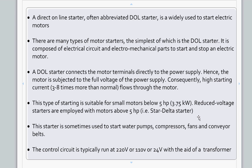This type of starter is only suitable for small motors, basically below 5 hp. Above 5 hp, it is better to use star-delta starter or electronic starters. This starter is sometimes used to start water pumps, compressors, fans, and conveyor belts. The control circuit depends on the coil—it can run on 220 volt, 110 volt, or 24 volt. In this case, you need to add a transformer to step down the higher voltage.